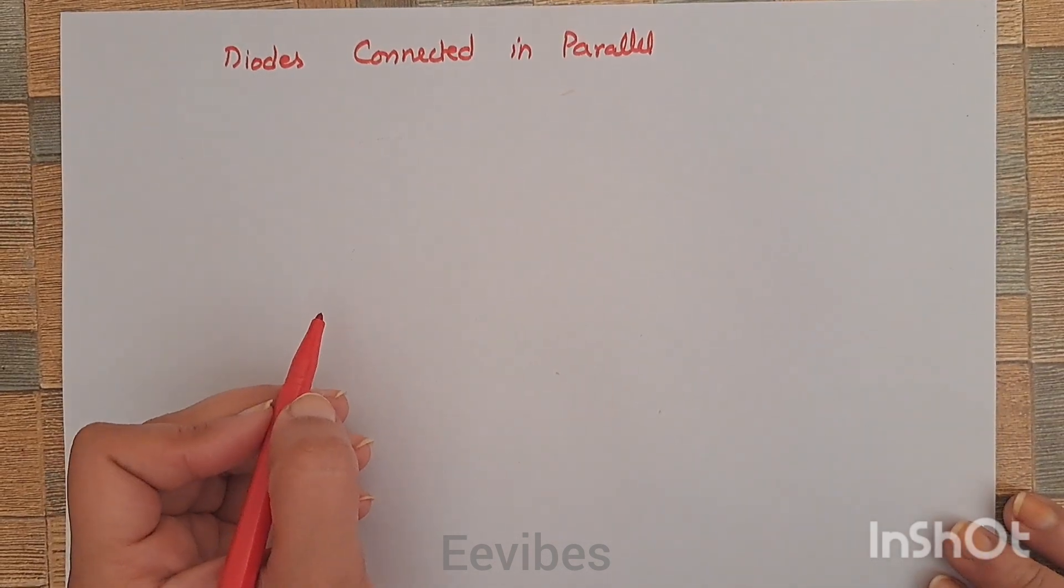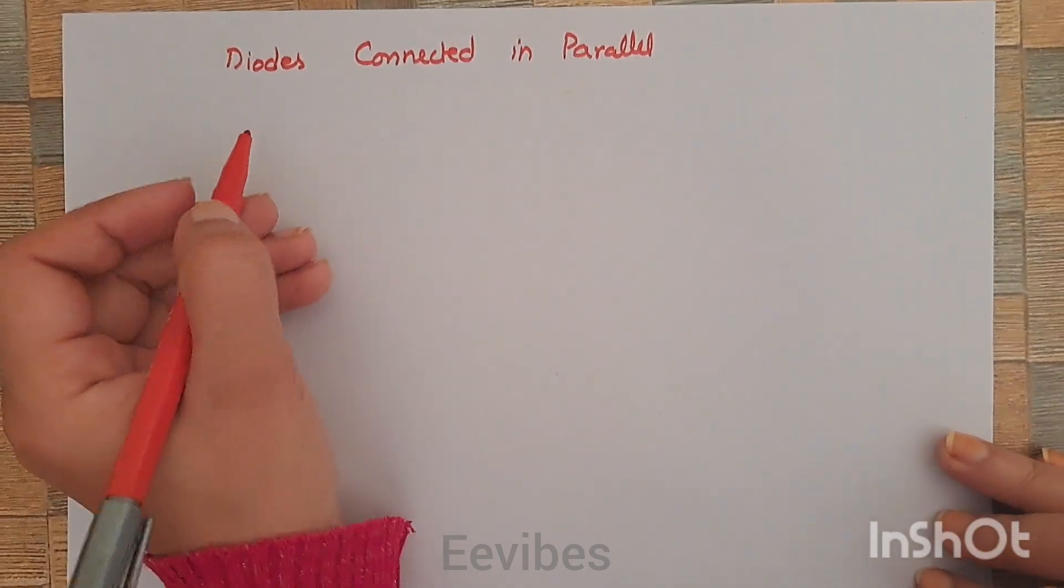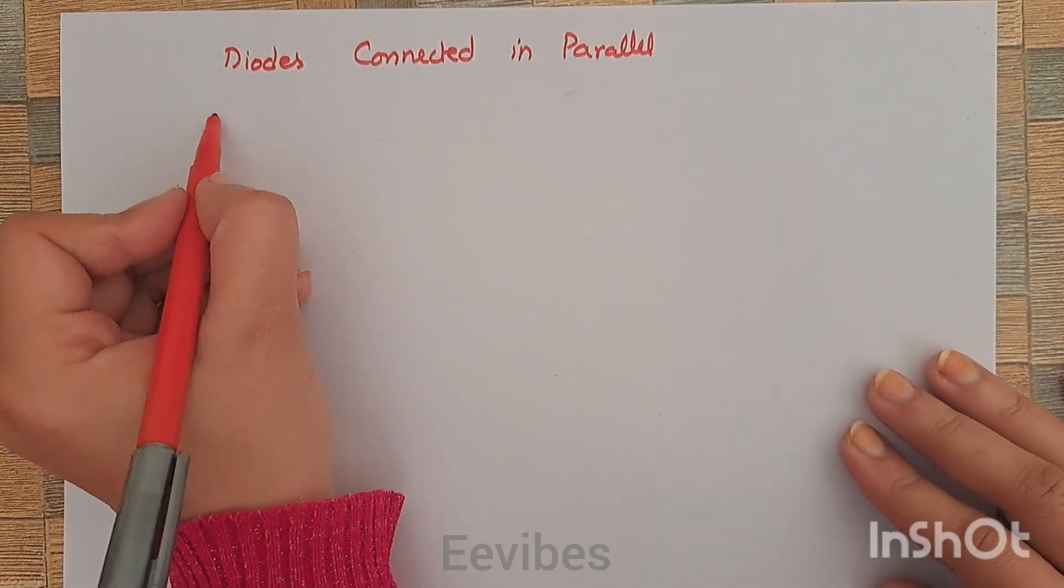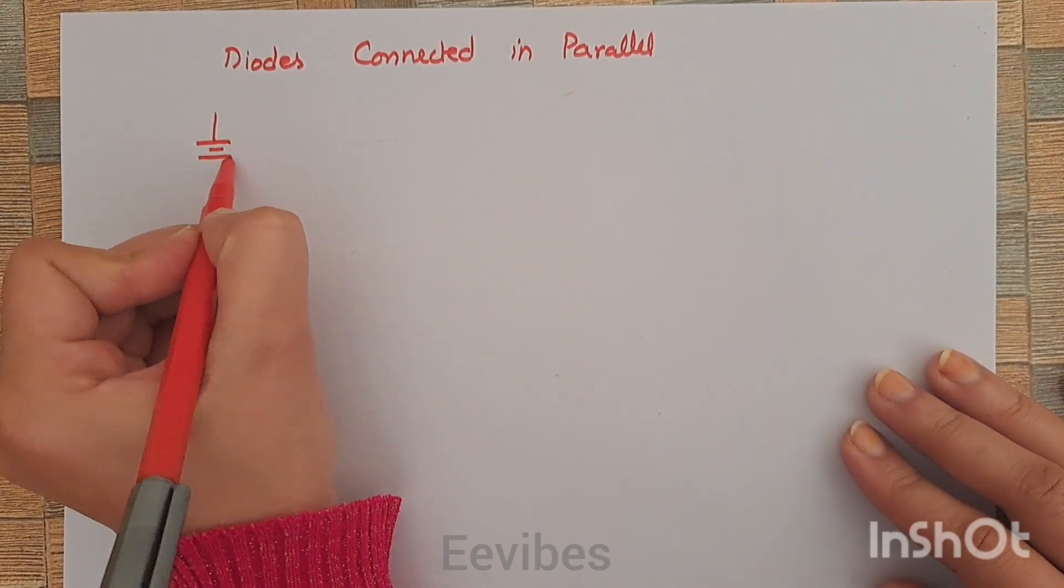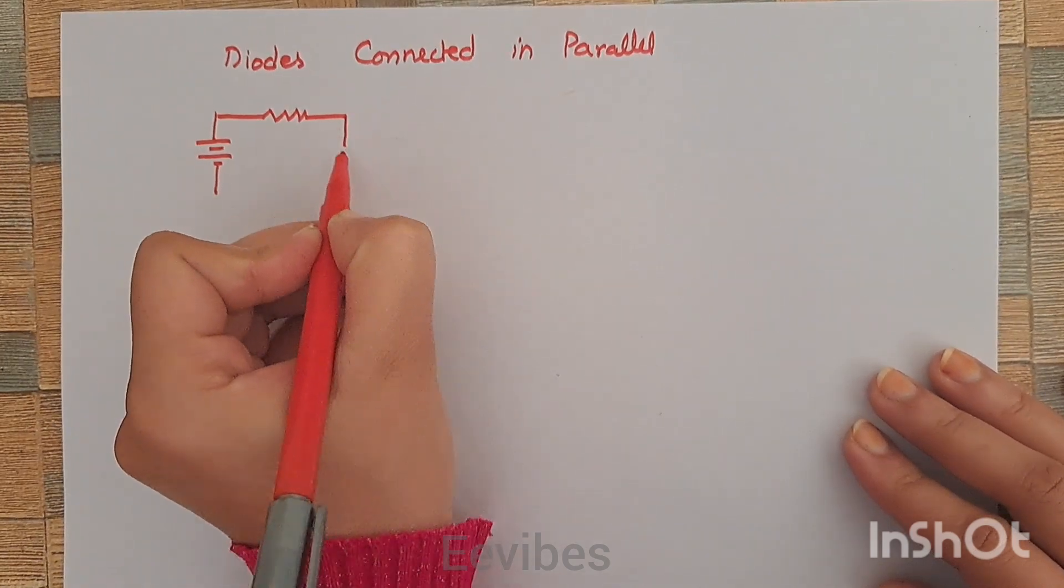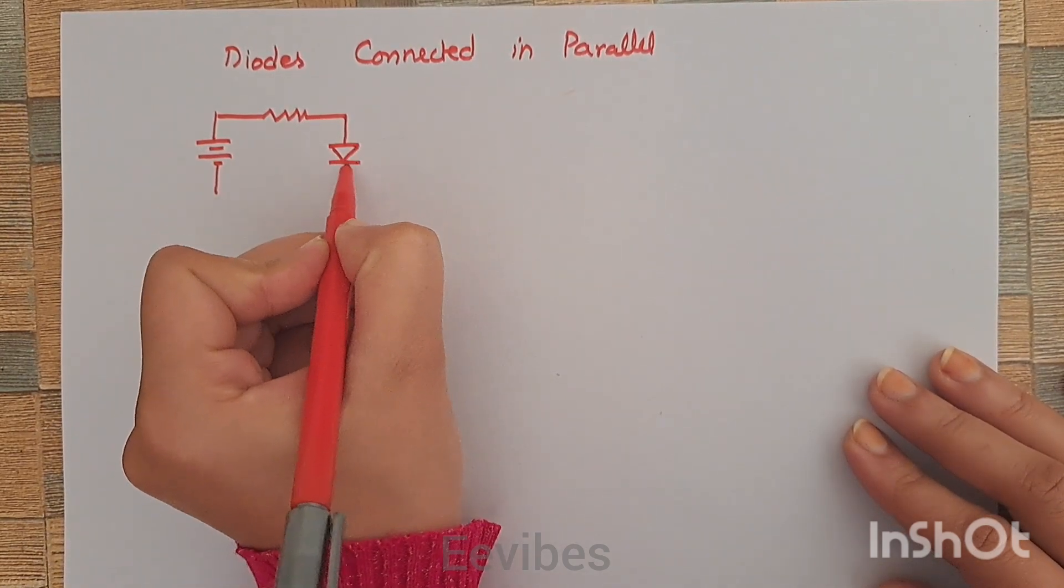Hi everyone, let's do an example where two diodes are connected in parallel with each other. Assuming that you are having a certain supply over here and this is some current limiting resistor.